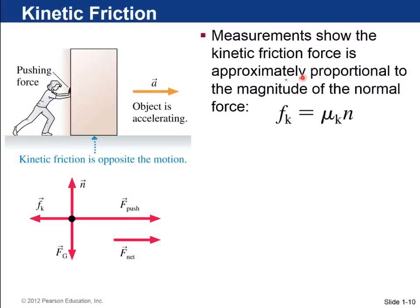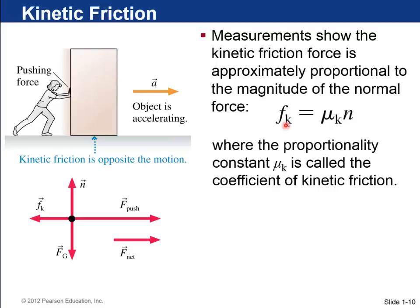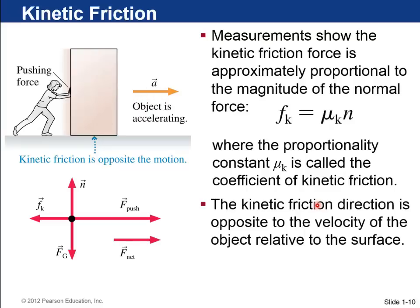So measurements show that the kinetic friction force is approximately equal to mu sub k times n. Mu sub k now is another coefficient, also dimensionless, called the coefficient of kinetic friction, and n is the normal force. So here is this box again, now she's pushing with this big force F push. There is a normal force up, force of gravity down, and now there's a kinetic friction force pointing backwards. But they no longer balance, so there's a net force towards the direction of motion here, so it's speeding up or accelerating.